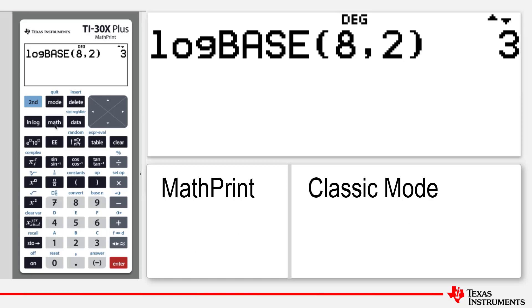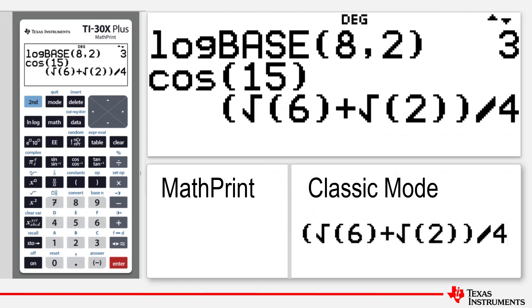Now try cosine 15 in Classic mode. We see here that the fractional answer is written in one line.